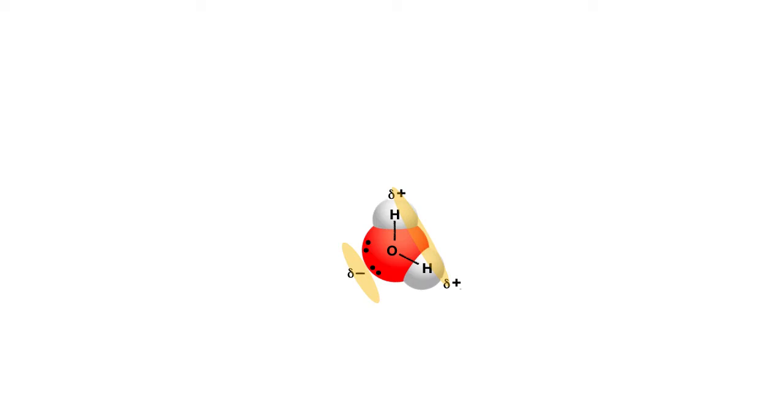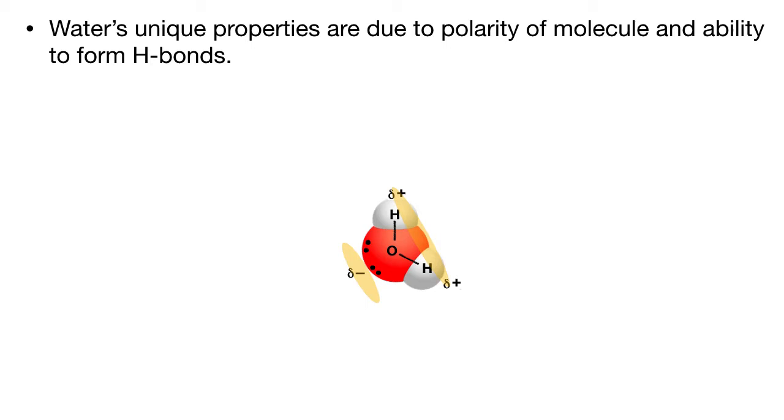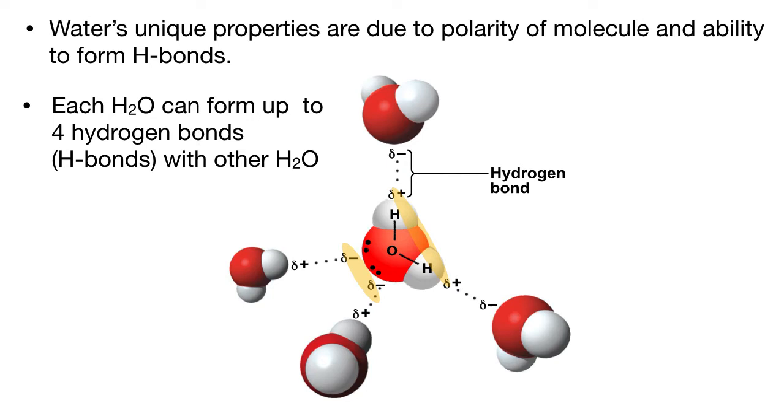So water's unique properties just boil down to polarity and hydrogen bonding. Pretty much all of the properties of water we will explore in this lesson occur because water is a polar molecule and also because it can hydrogen bond with other polar molecules and with itself. More specifically, each water molecule can actually form four hydrogen bonds with other water molecules.